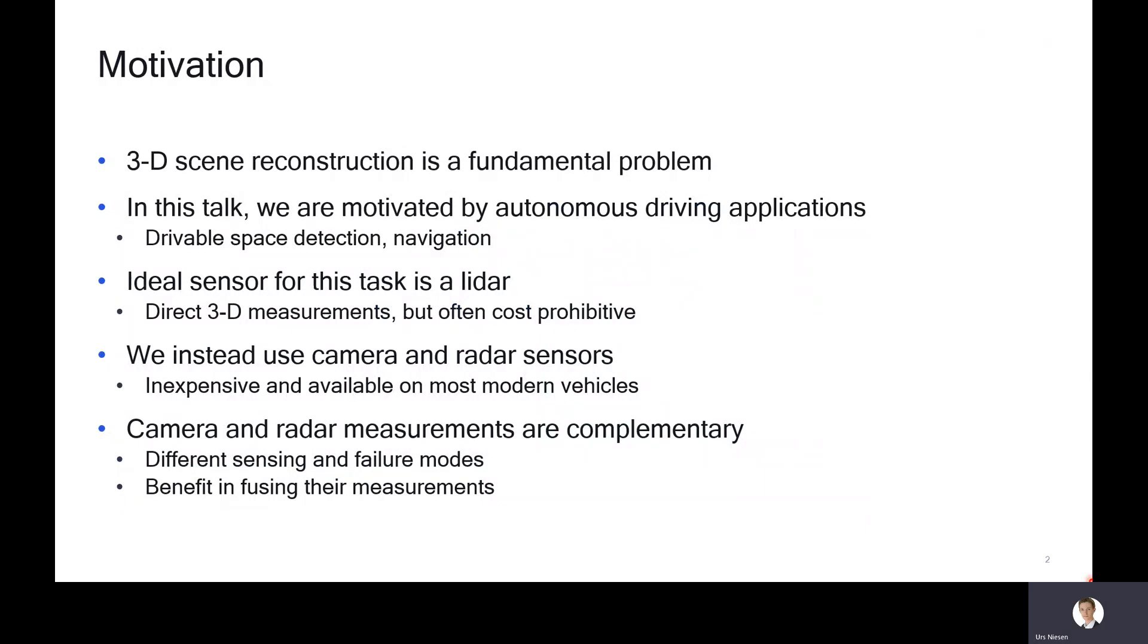3D scene reconstruction is a fundamental problem in robotics. In this paper, we are motivated by applications to autonomous driving, such as drivable space detection and navigation. The ideal sensor for the 3D scene reconstruction task is a LiDAR, which gives you a direct 3D measurement of the environment that is high resolution with little noise. The downside is that it's an expensive sensor and therefore often cost prohibitive. In this work, we instead use a camera and a radar sensor. These are inexpensive sensors available on most modern vehicles.